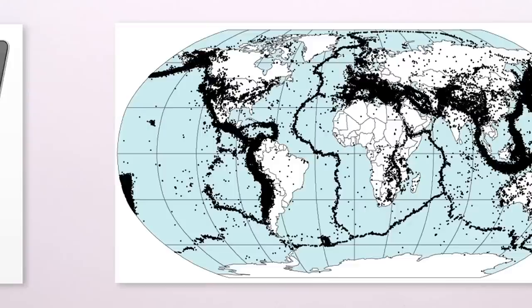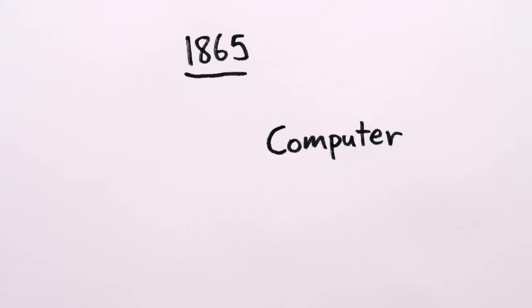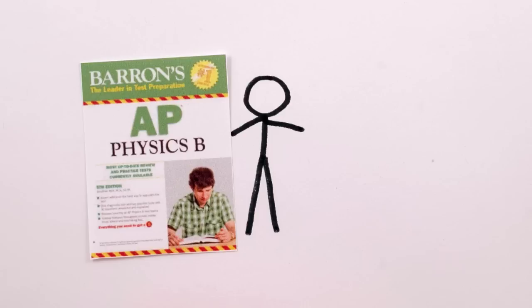Or imagine if biology classes didn't talk about DNA, or hormones, or cell reproduction, or the modern germ theory of disease, or ecology. Or if geologists didn't talk about plate tectonics. And computer scientists? Well, in 1865, a computer was a person who computed your taxes.